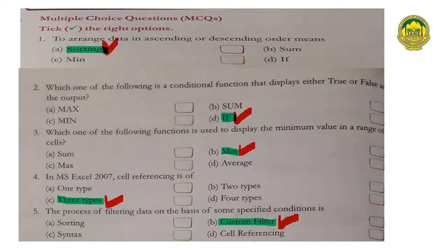First we will do multiple choice questions. Tick the right option. Number one: to arrange data in ascending or descending order means (a) sorting (b) sum (c) mean (d) IF. Answer: (a) sorting is the right option.